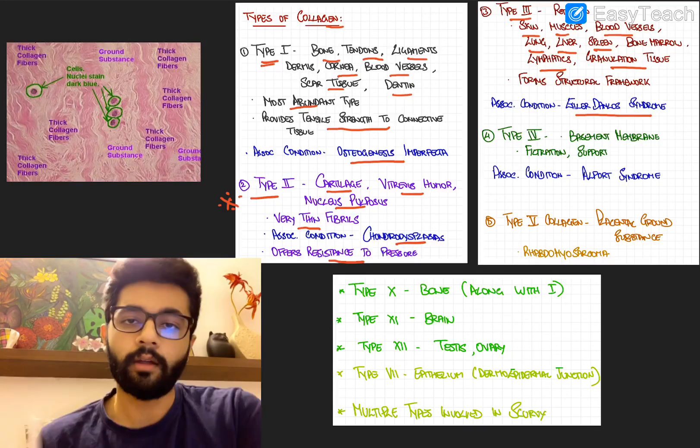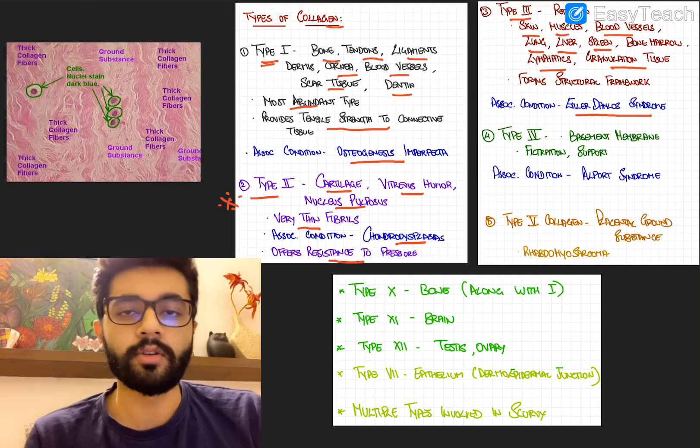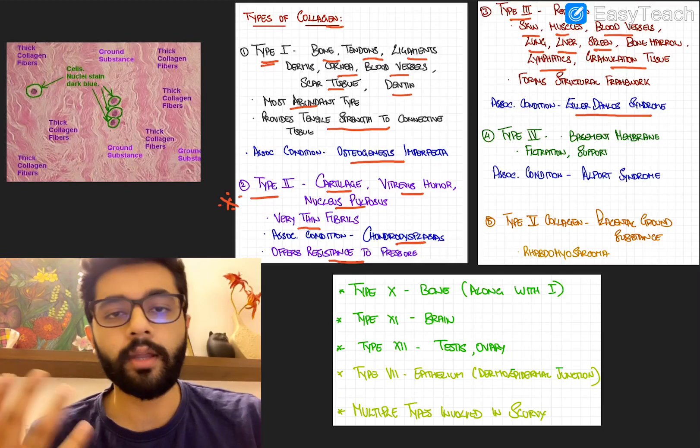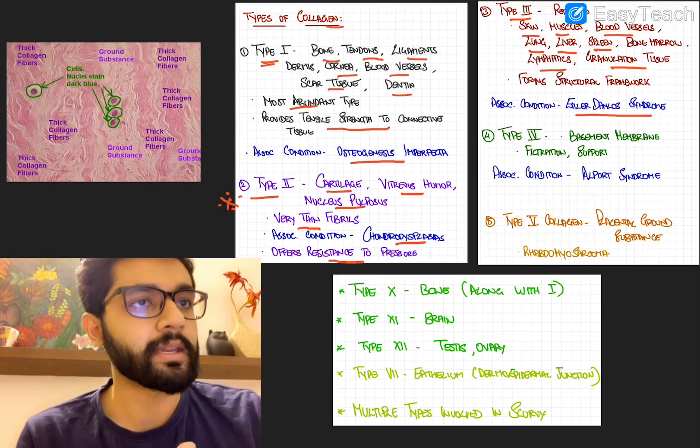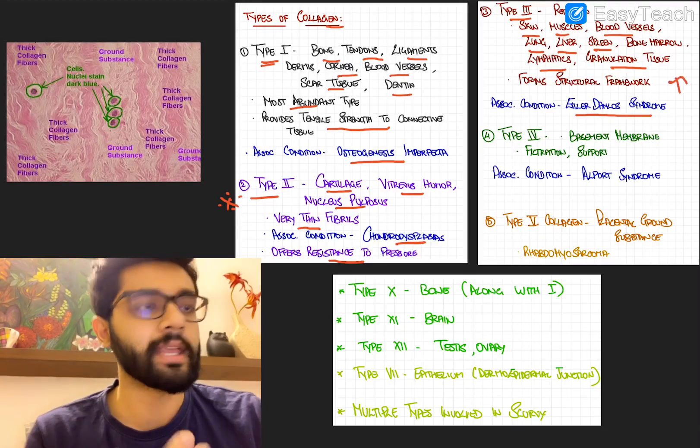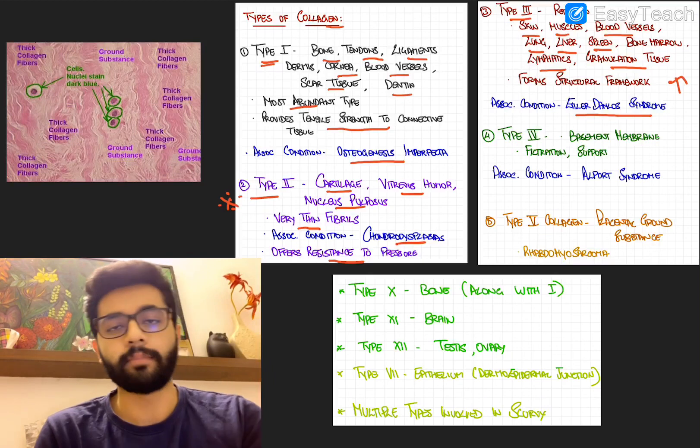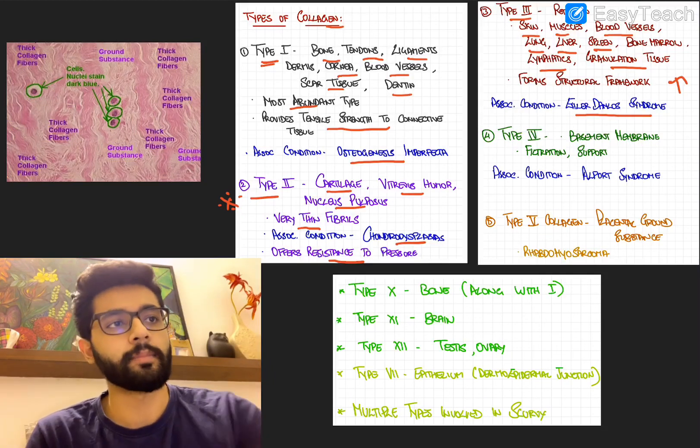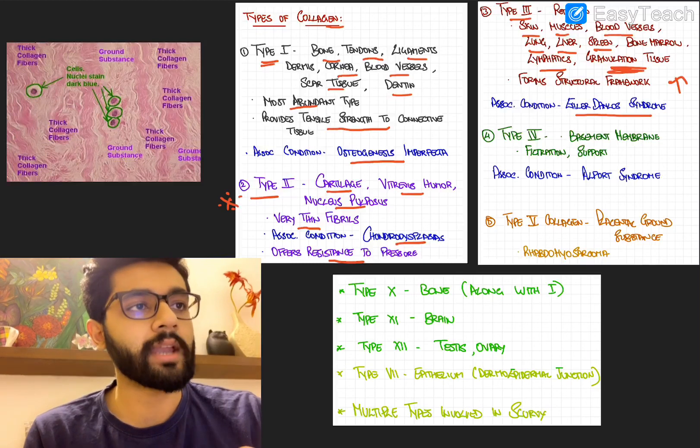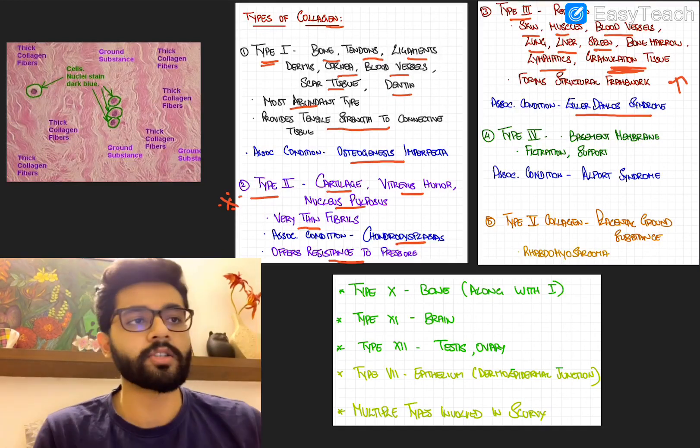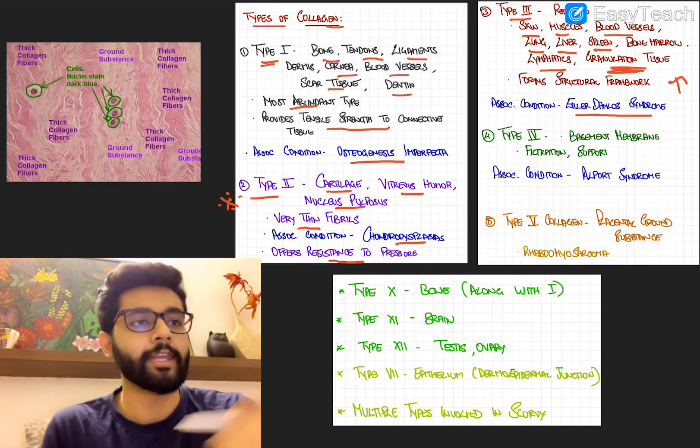Another point we discussed earlier in our MCQ discussion regarding keloid: keloid is a defective scar formation where there is increased type 3 collagen deposition. So remember, keloid is also associated with type 3 collagen and increased type 3 collagen deposition. You can remember, granulation tissue, there's excess granulation tissue in keloid, so granulation tissue also has type 3 collagen. Type 3 collagen, also called reticulin.